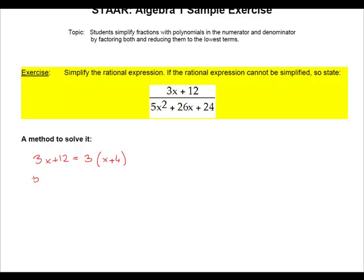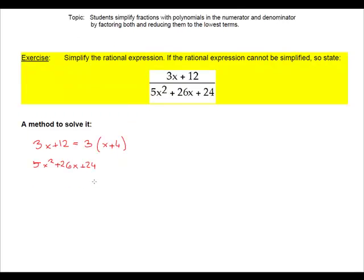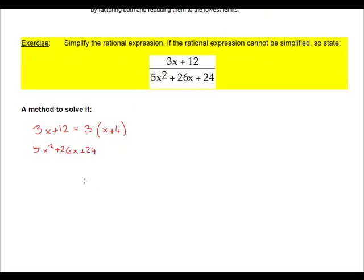Now, to factor the denominator, which is 5x squared plus 26x plus 24, then we apply factoring by grouping procedure. So first, we look for two numbers. Those product is 5 times 24, which is 120, and also the sum is equal to 26. So that's the sum, and that's the product for the two numbers that we need to guess and check.